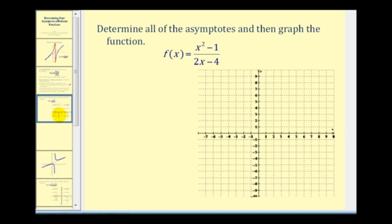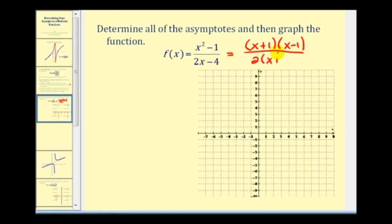Let's look at an example where we want to determine all asymptotes and graph the function. The first step is to factor the given function. Our numerator is a difference of squares, and our denominator has a common factor of two. Notice there is only one zero of the denominator and it is not a zero of the numerator, so we have a vertical asymptote at x equals two. Let's go ahead and sketch that.